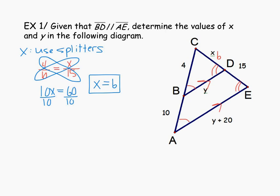To find the value of Y, notice where Y is located — it's not on one of the two sides being split. So we cannot use the splitter theorem to find Y. Remember there are two similar triangles in this diagram: triangle BCD is similar to triangle ACE. Y and the segment Y plus 20 may be corresponding sides in those similar triangles. Let me draw those two triangles separately. Note that the whole segment CA has length 14 (since 4 + 10 = 14), and CE has length 21 (since 6 + 15 = 21).